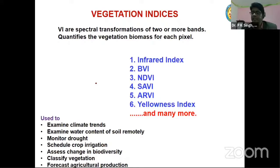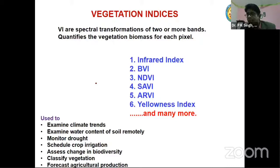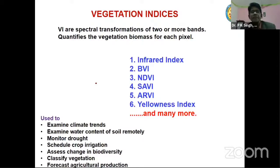Coming to different vegetation indices — this is a widely used and highly varied field nowadays, not only in forestry but even in geological investigations. We use band ratio techniques to get information, sometimes up to the mineralogy level. On the basis of mineralogy, we can detect what will be the rock type, because rocks are combinations of different minerals in different proportions.